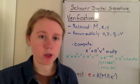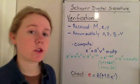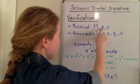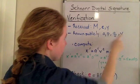Now the receiving parties need to be able to verify that what they've received is actually from you. So just as a recap, what we've received is the m, e, and y. And what is known publicly is the a, p, q, and v.